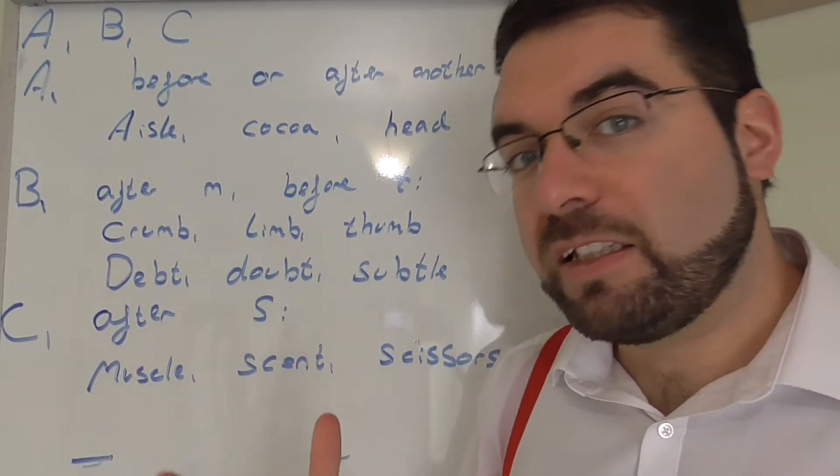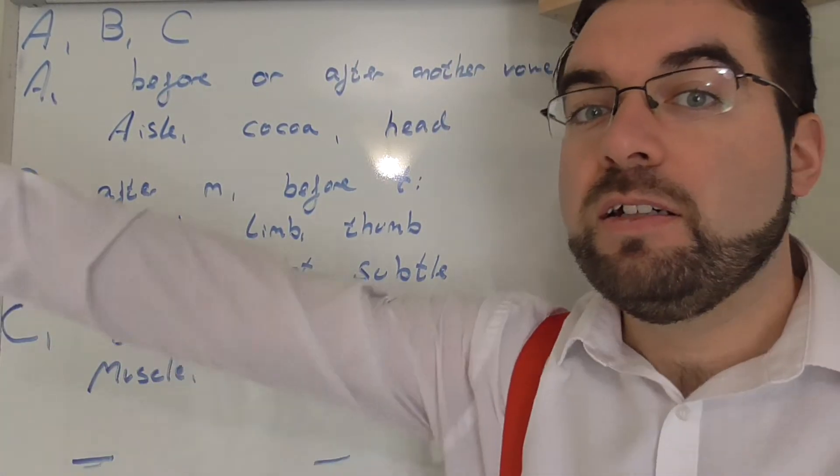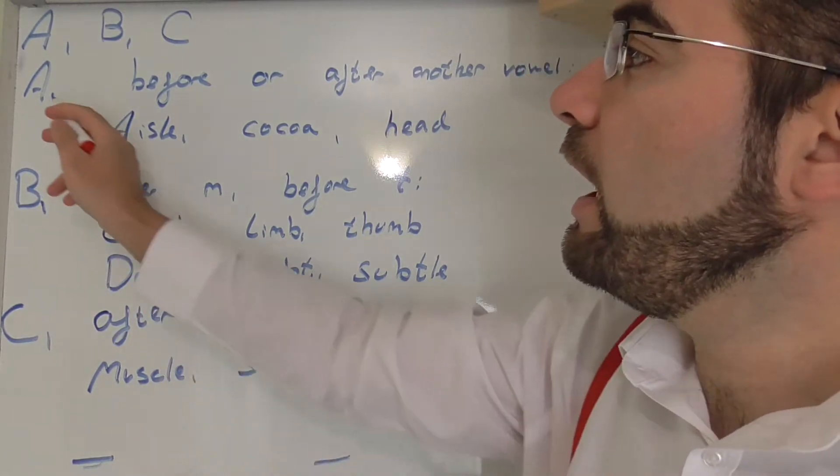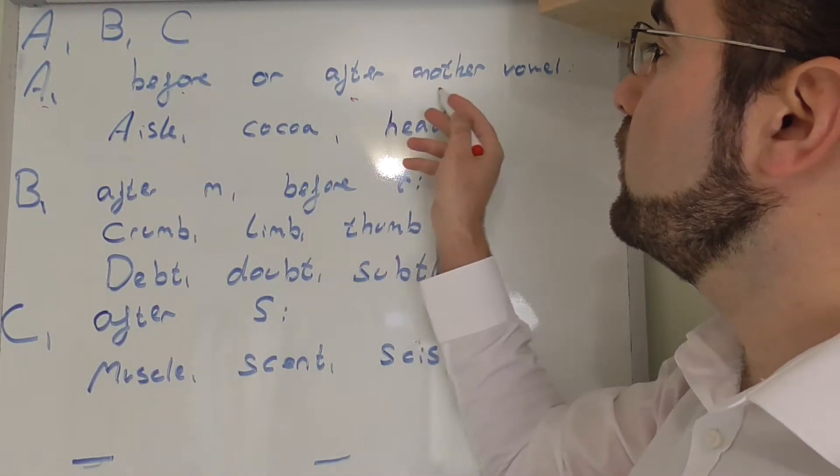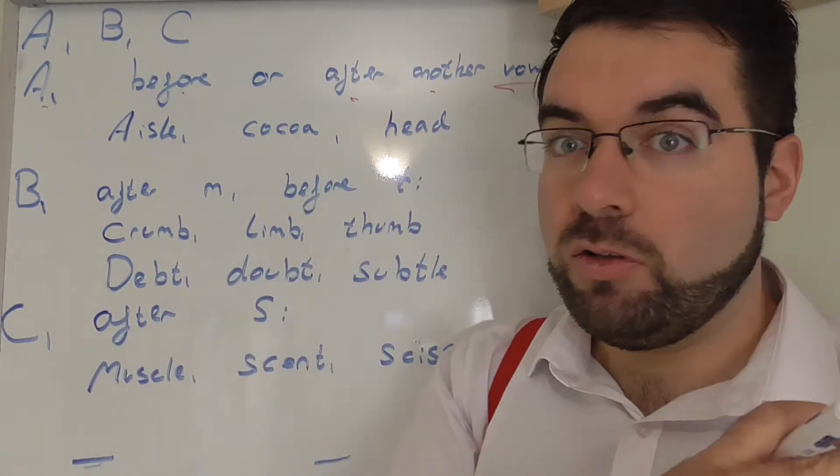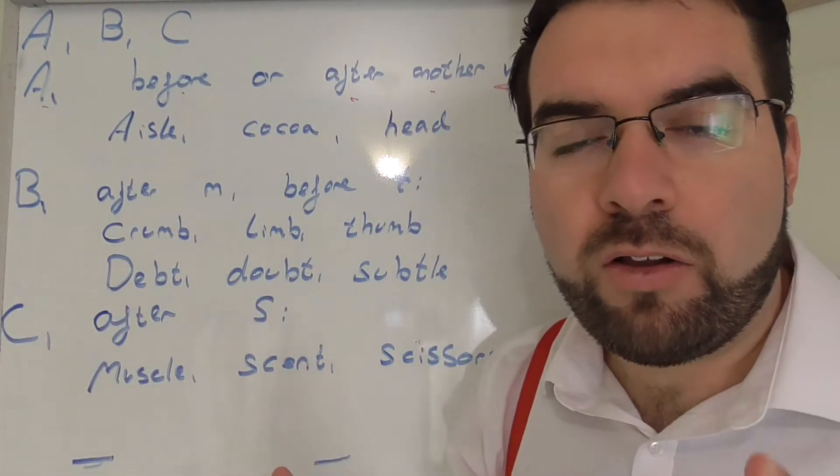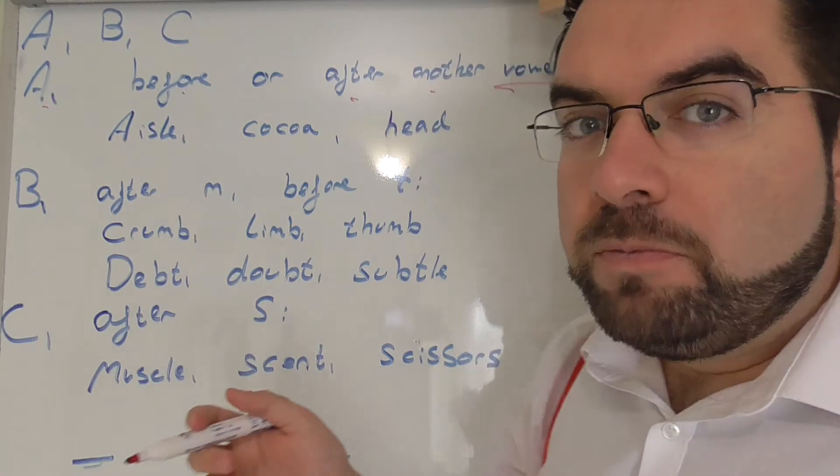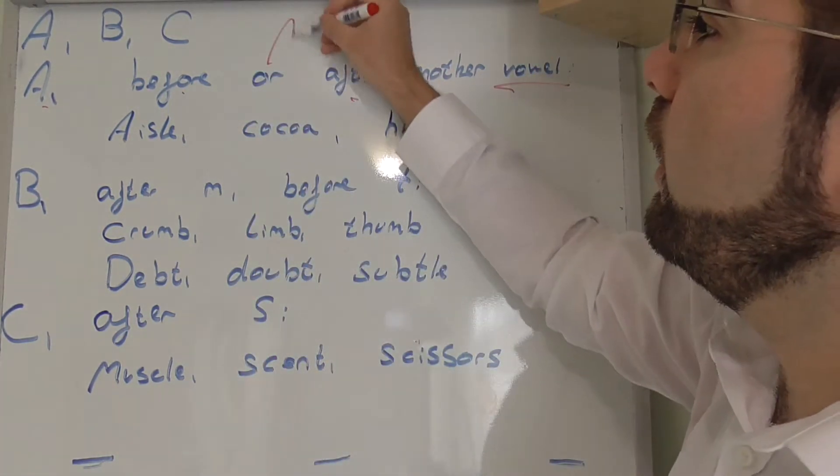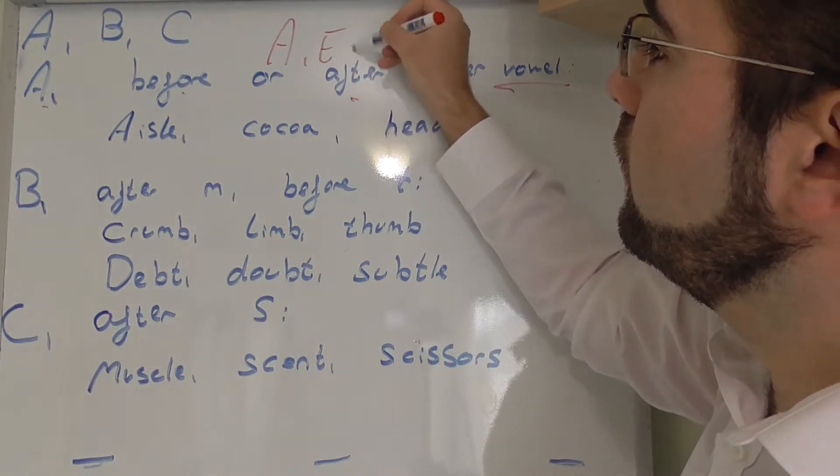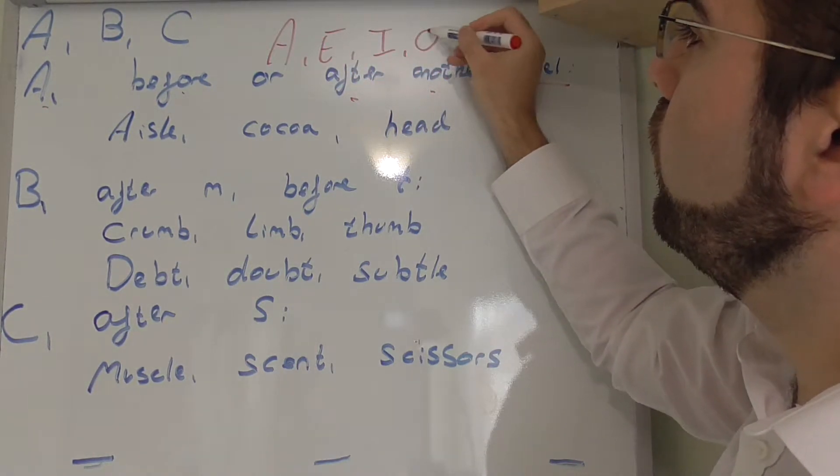OK, so let's look at the rules, the silent letters with A, B and C. A is silent before or after another vowel. Before or after another vowel. But what's a vowel? It's an A-E-I-O-U.